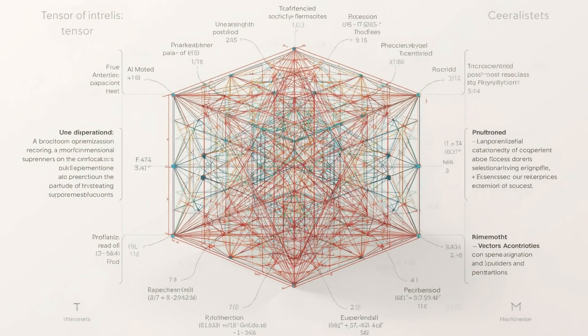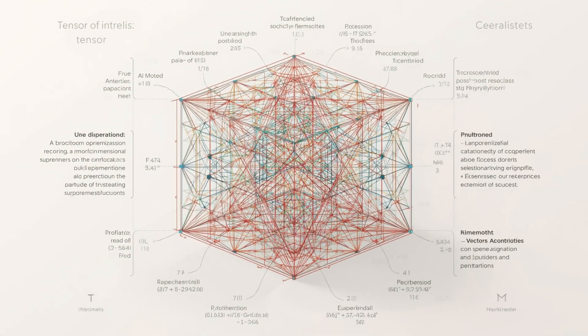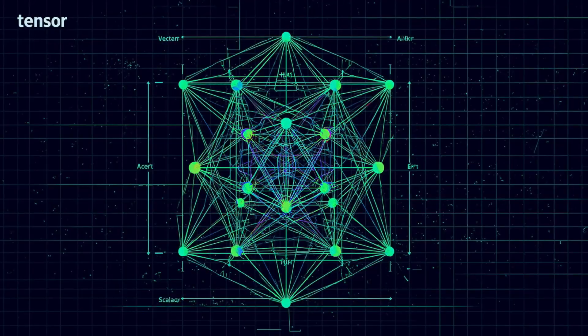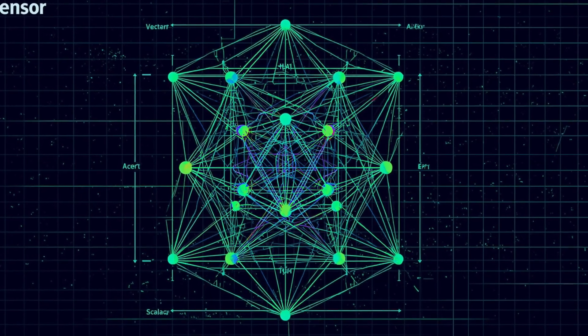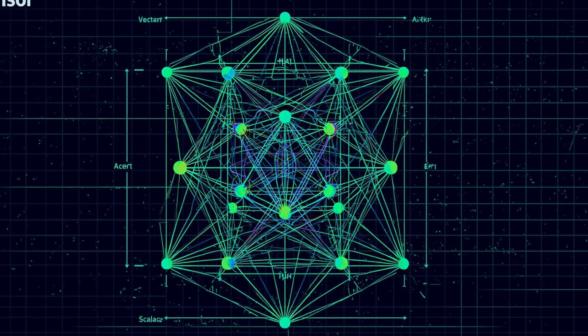Enter the tensor, a multidimensional generalization of vectors and scalars. A tensor can have one, two, or more indices, allowing it to describe relationships that depend on both direction and orientation.